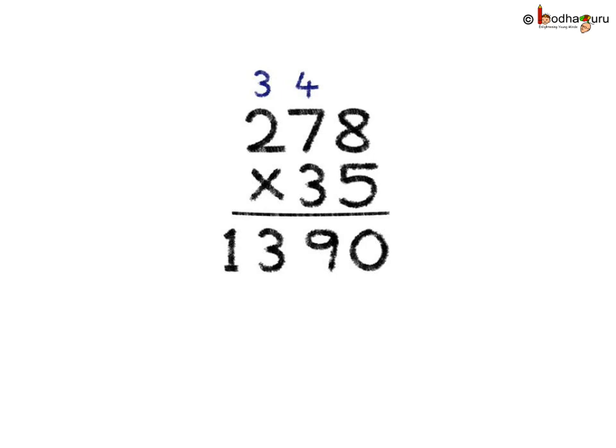We start multiplying by 5. 5 eights are 40, so 4 is the carry forward. Next, 5 sevens are 35, to which we add 4, which becomes 39. So 3 is the carry forward. Next, 5 twos are 10. Now we add the carry over, which is 3. 10 plus 3 is 13. So here we get 1390.